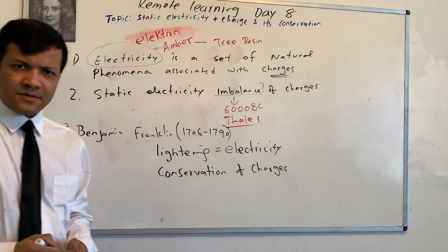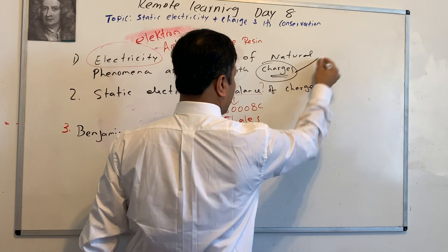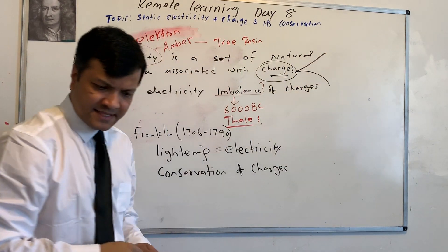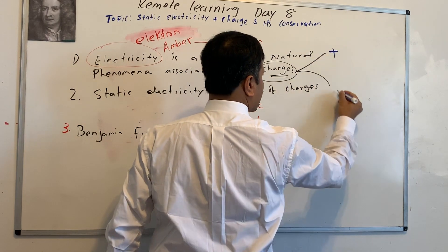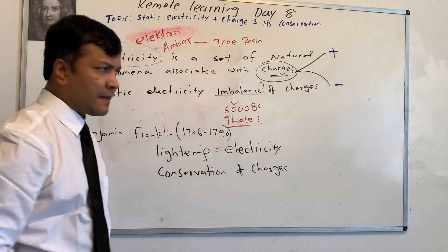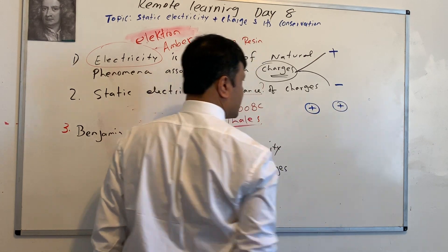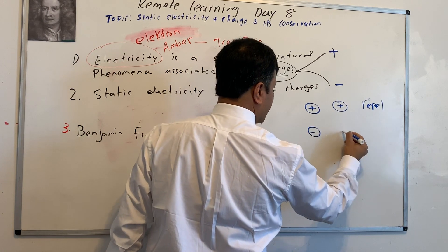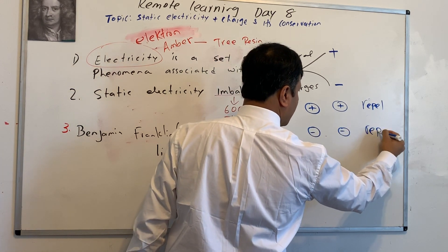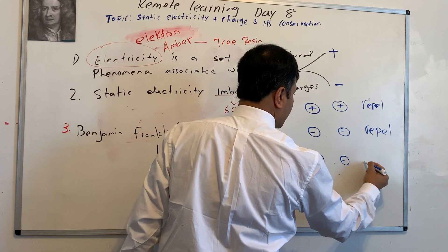What does charge, now let's take us back to charges. He was the first person who hypothesized that there are two types of charges, positive and negative. Positive, positive repel. Negative, negative repel. Negative and positive attract.